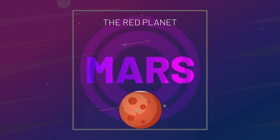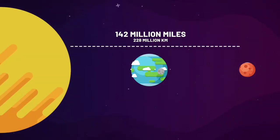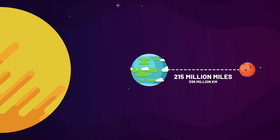Mars, the red planet. As the fourth planet, Mars lies some 142 million miles from the Sun, yet it sits around 215 million miles from Earth.